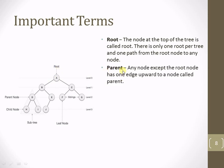The next term is parent node. D is a parent of child nodes H and I; B is a parent of nodes D and E; A is a parent of nodes B and C. A parent is any node except the root that has one edge upward to a node. D is a parent of H and I. Although A is also technically a parent, we refer to it as the root node.